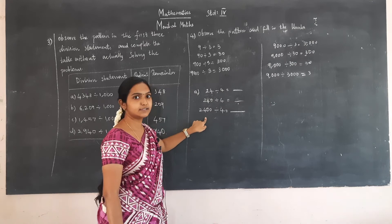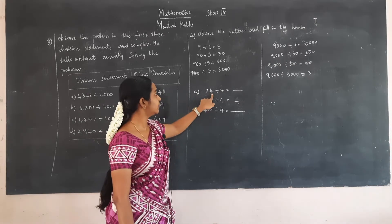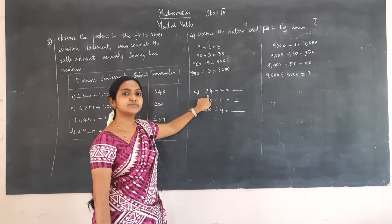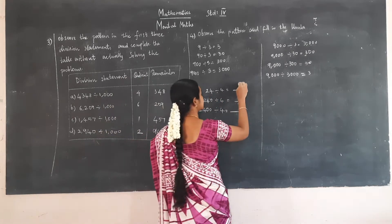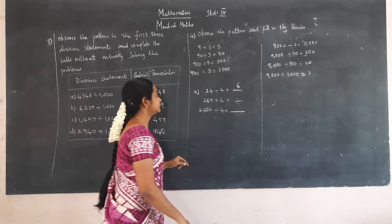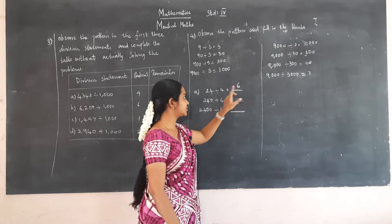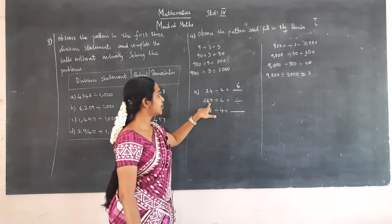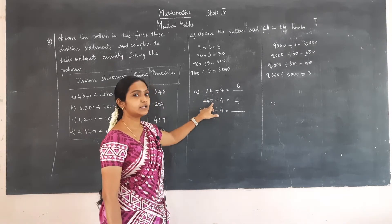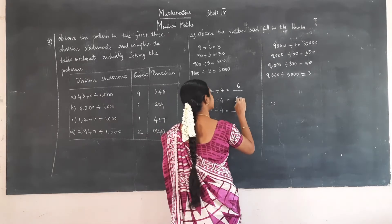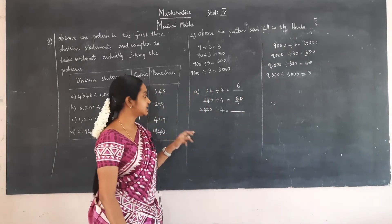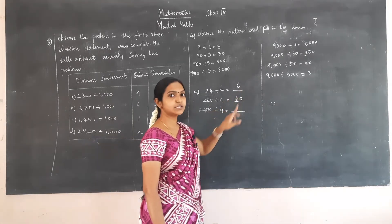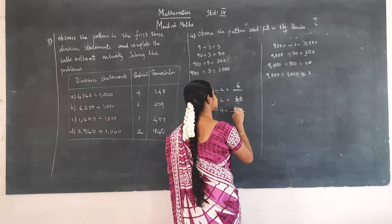Now we are going to fill the blanks. 24 divided by 4 is 6, because 6 fours are 24. For 240 divided by 4: the number 24 remains the same but we have added a zero, so add another zero to the quotient, making it 60. For 2400 divided by 4: two zeros are added, so we add two zeros to the quotient, giving 600.